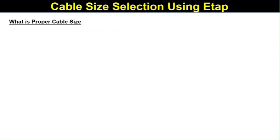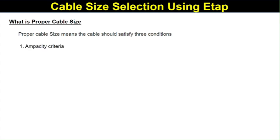The cable size is proper when it satisfies three conditions. First is the ampacity criteria — the cable should be able to carry the load current without getting damaged. Second is the voltage drop criteria — the voltage drop across the cable should remain within the prescribed limit. Third is the short circuit criteria — the cable should withstand the short circuit current for the time duration as per the protection device setting.